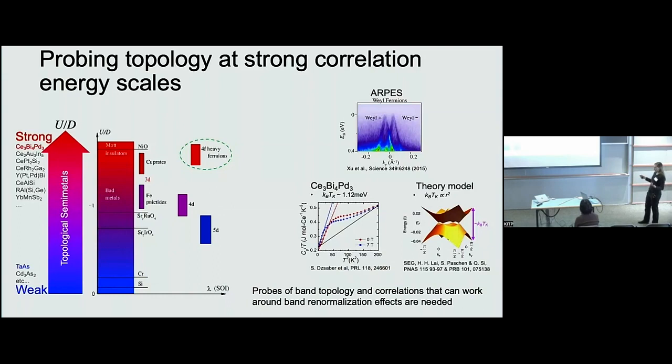For tantalum arsenide, people have looked at ARPES, which shows a very nice result of these linear cone dispersions in the bulk. But of course, if we look at the y axis, this is on the scale of electron volts. The relevant energy scale in cerium 343 is on the order of kB times TK.